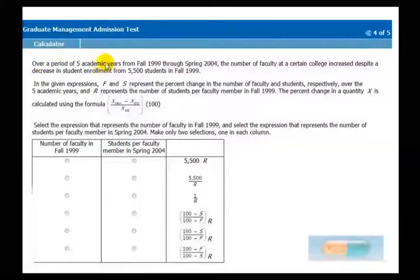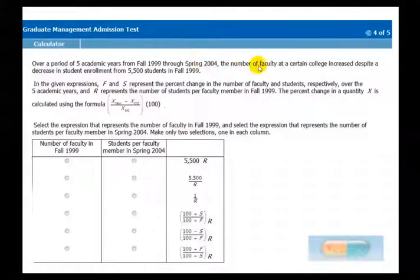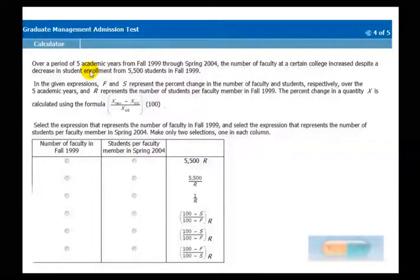Over a period of five academic years, from this year to that year, the number of faculty at a certain college increased despite a decrease in student enrollment from this amount in the first year. So already you know you're comparing two time slots from this year to that year. You're also going to compare the number of faculty to the number of students and there's some kind of ratio in there and you can compare that ratio between 1999 and 2004. So that's the sense of the problem you already have.